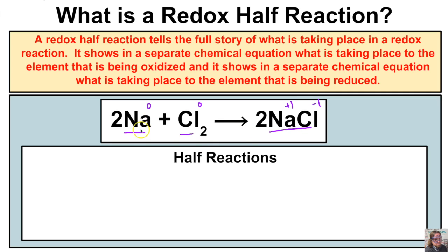Sodium is going from an oxidation state of zero to an oxidation state of +1, so it must lose an electron to form a positive ion. Because sodium is losing an electron, sodium is being oxidized. Chlorine goes from an oxidation state of zero on the reactant side to -1 on the product side, so it must gain an electron — therefore chlorine is being reduced.